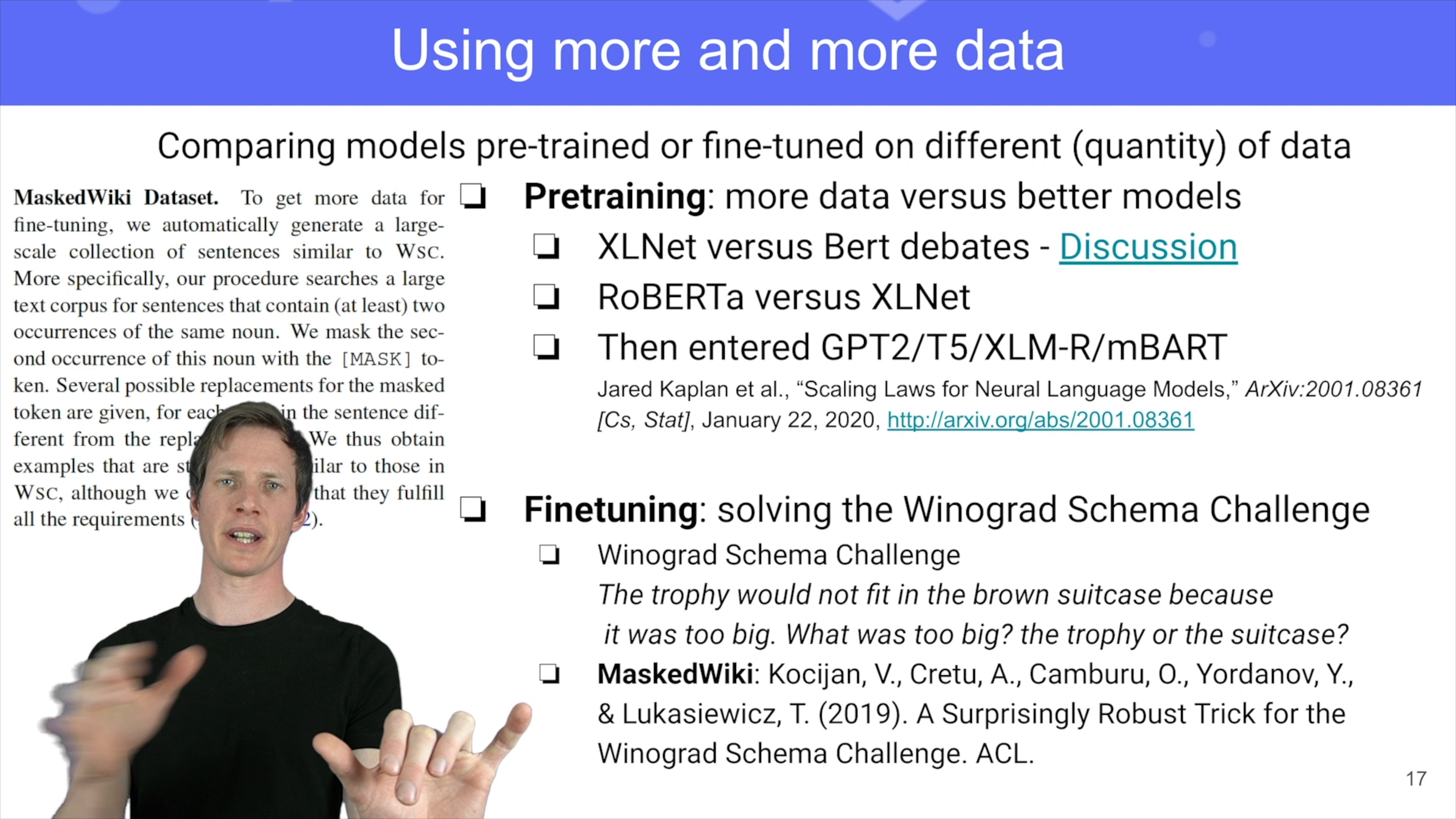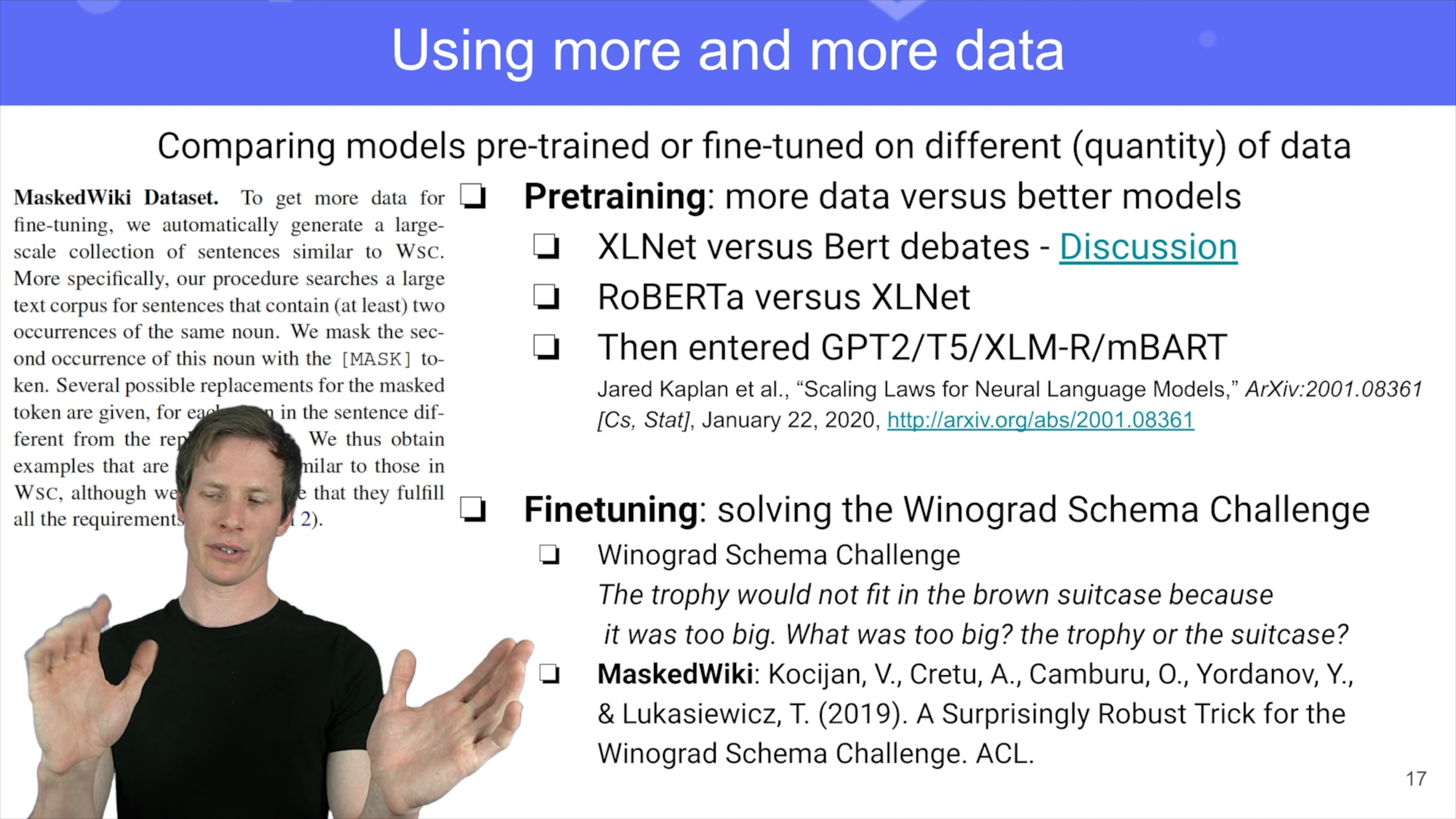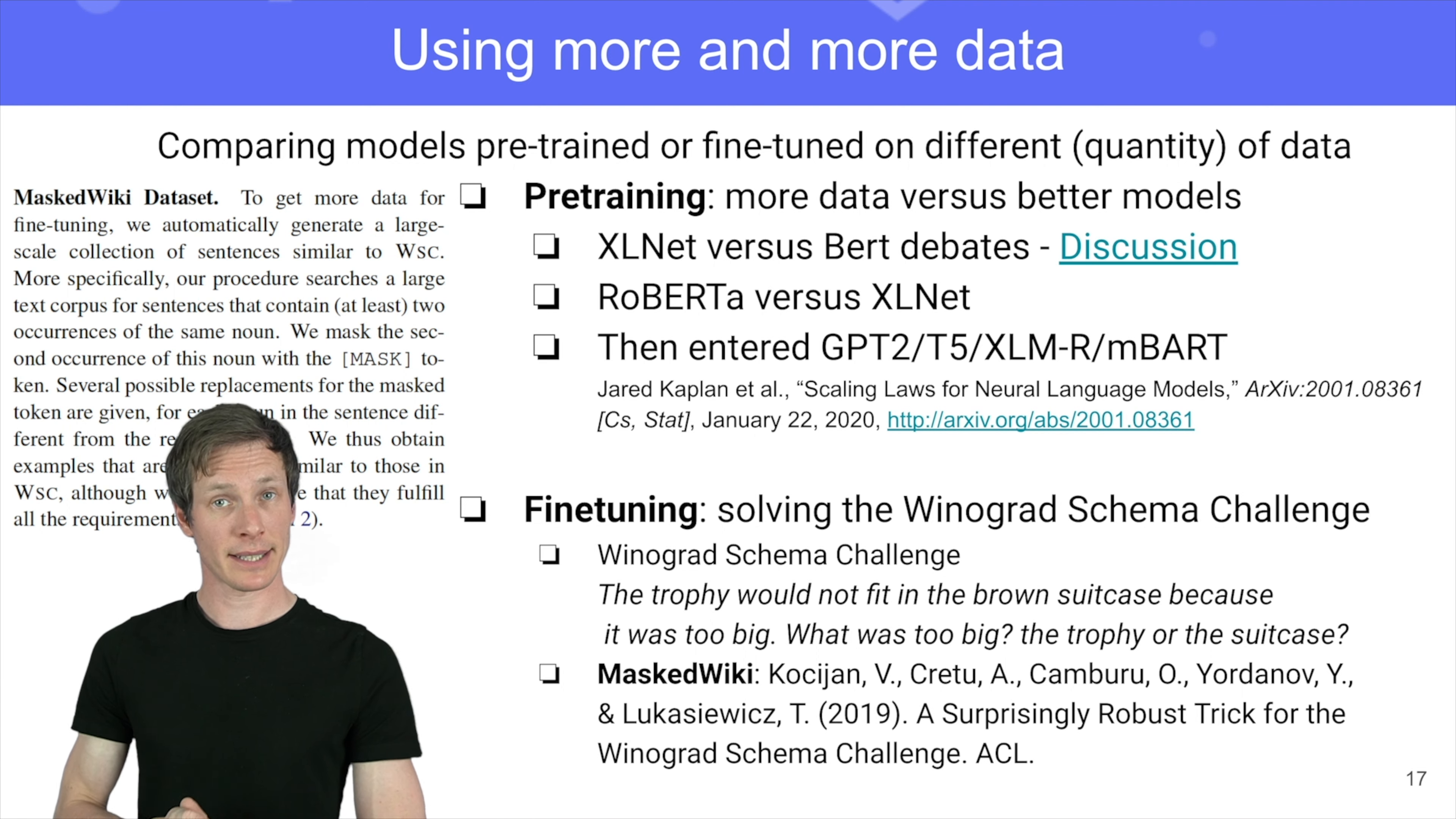Usually when we do autoregressive training, we only go the right way, so our model is masked. The right context of each token for the model is masked. But in XLNet actually they do autoregressive with a random permutation, so the model actually learns to pay attention to both contexts.